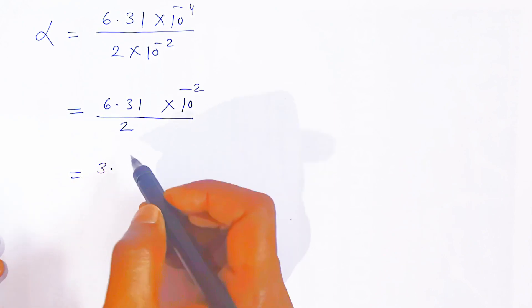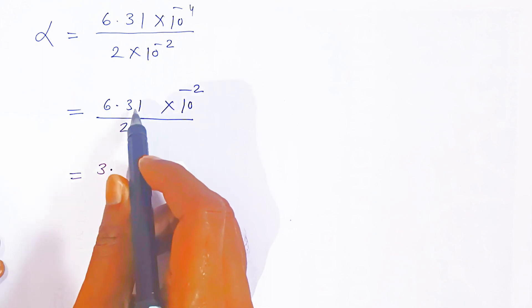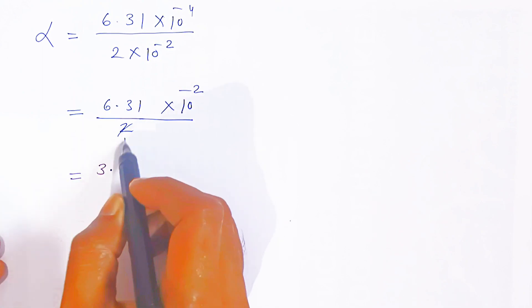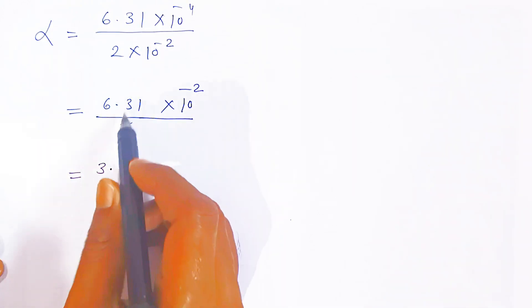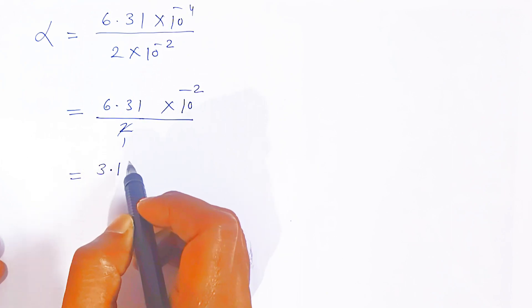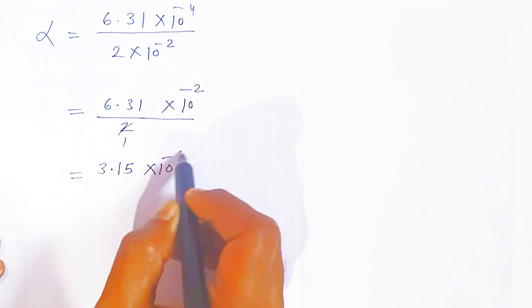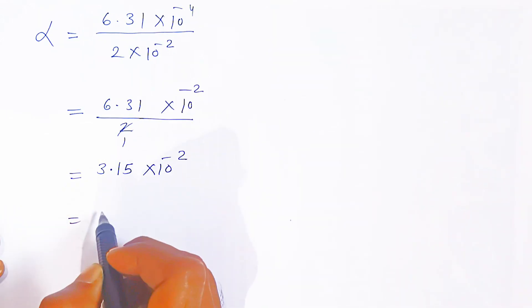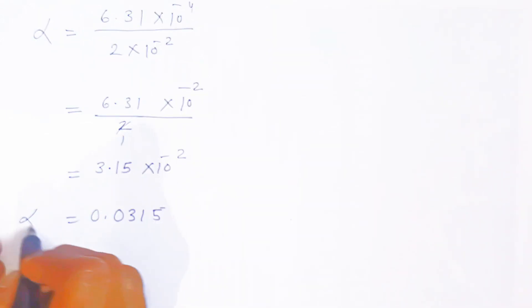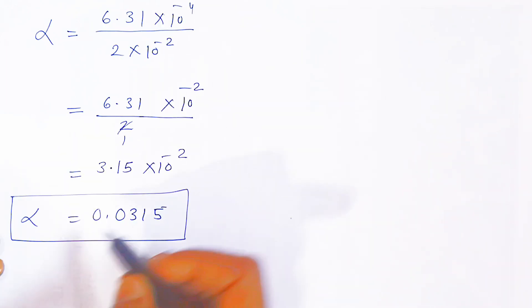Completing the division, we get alpha = 0.0315. So the degree of dissociation is 0.0315. Now that we have the degree of dissociation, we can calculate the dissociation constant of the acid.